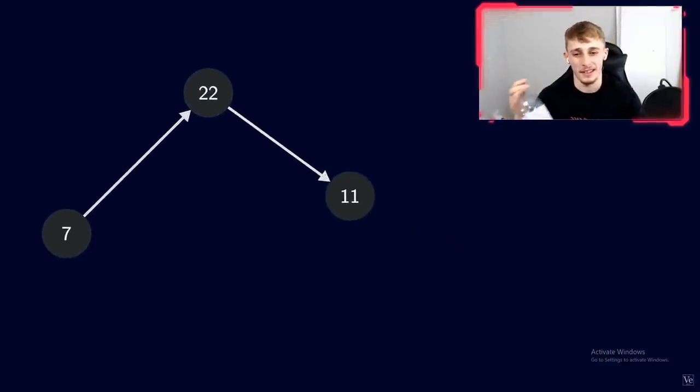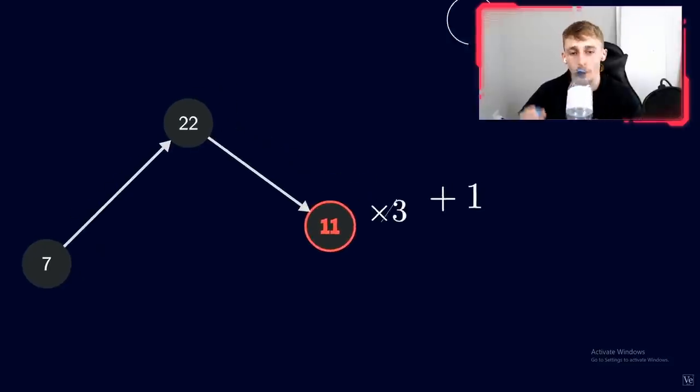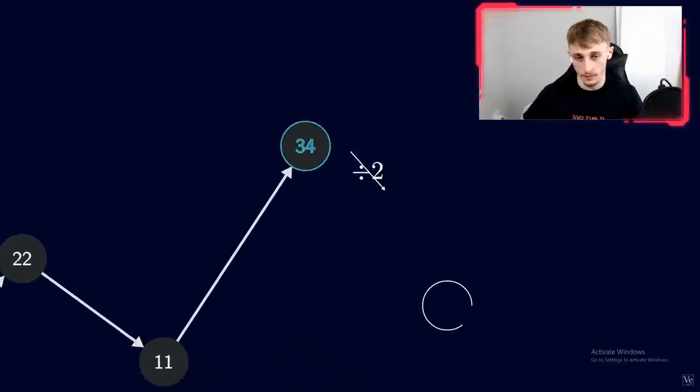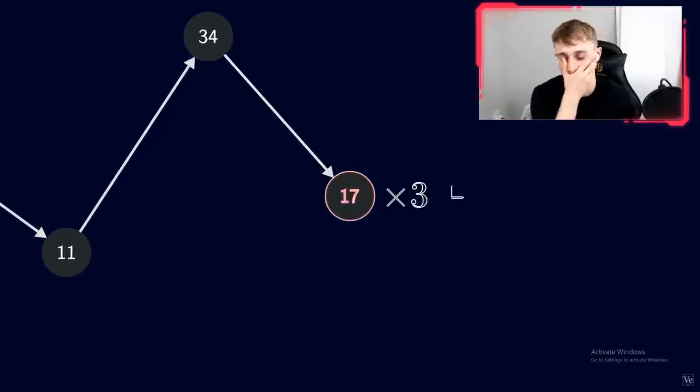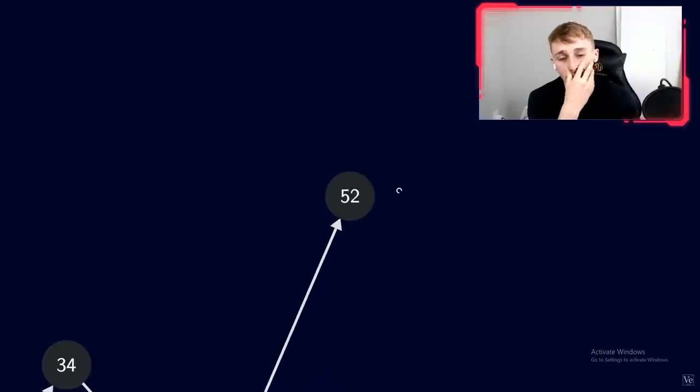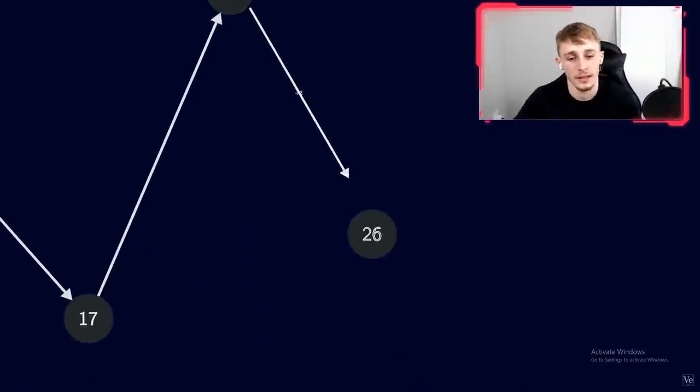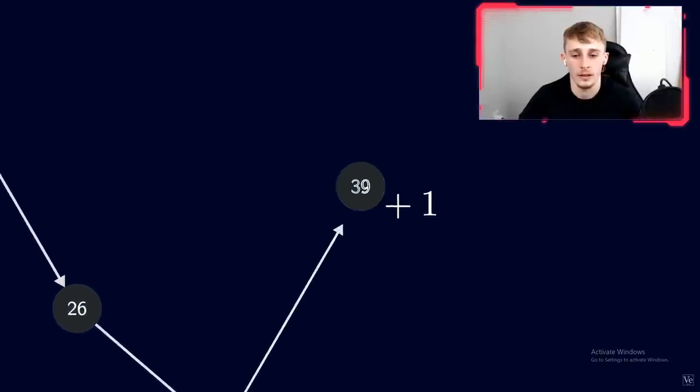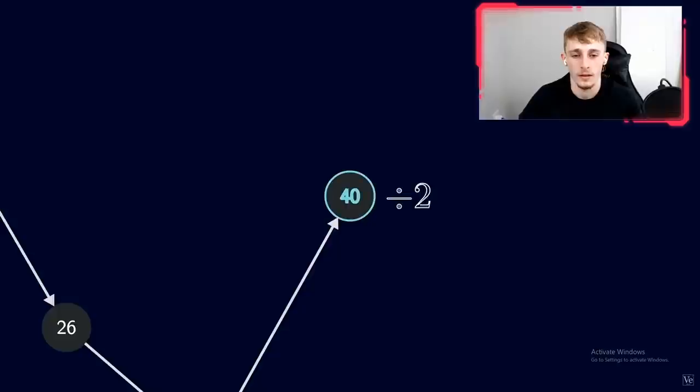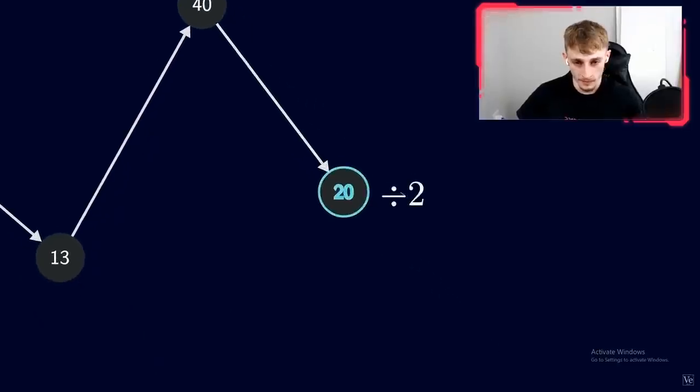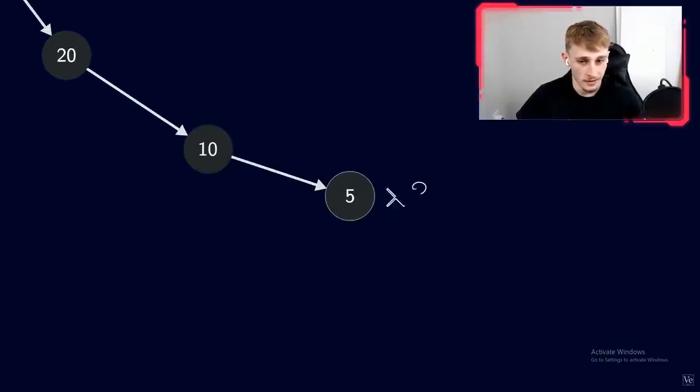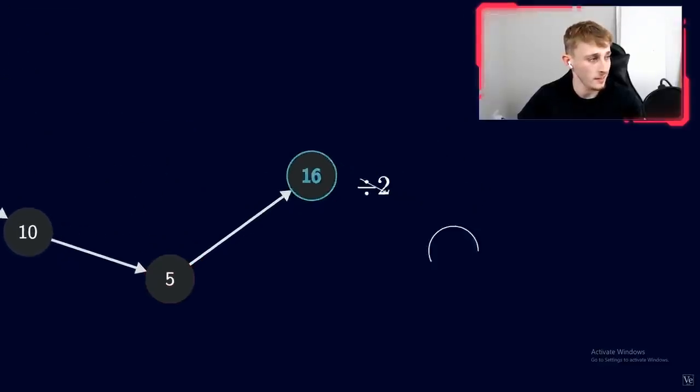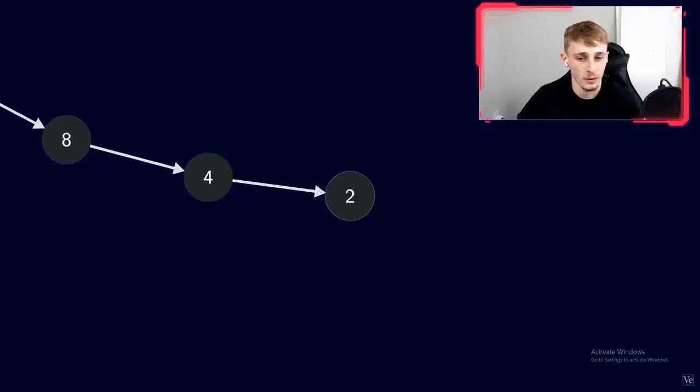Now we keep applying these two rules. 11 is odd, so we multiply by three, 33, and add one, 34. Even. Divide by two, 17. Multiply by three, 51, add one, 52. Even. Divide by two, 26. Still even. Divide by two, 13. Odd. So we multiply by three, 39, add one, and that's 40, which is even. So we divide by two, 20. Divide by two, 10. Divide by two, five. Odd. Multiply by three, 15, add one, 16. Divide by two, that's eight. And then four, two, and one.